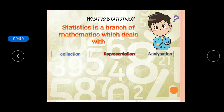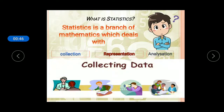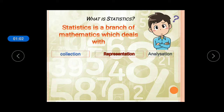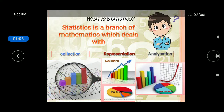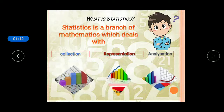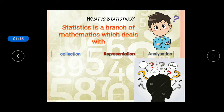Collection refers to how data is collected — in many ways like interviews, observation, from old records, conducting meetings, and so on. Next, representation is presenting the data in the form of tables or graphs. Analyzation means studying the data in order to get a result.